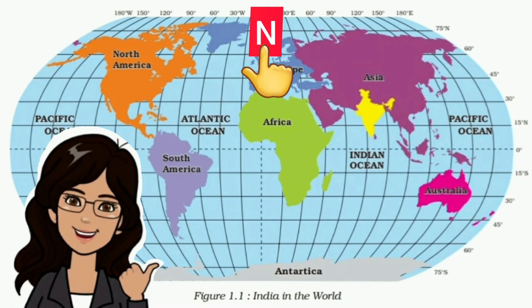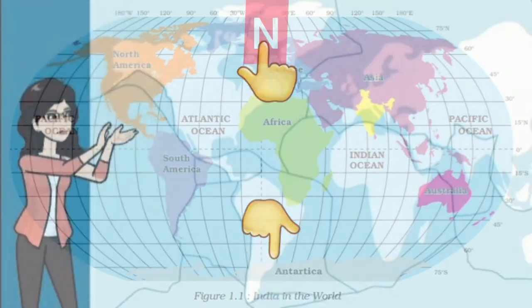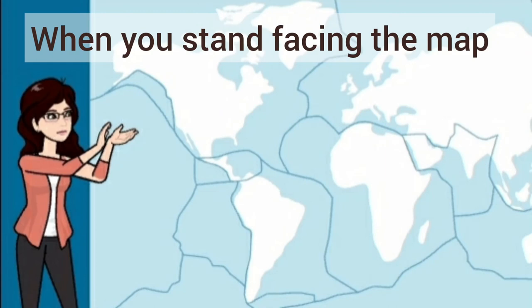When you stand facing the map, the right-hand side is the east and the left-hand side is the west. These four directions—east, west, north, and south—are called cardinal points.